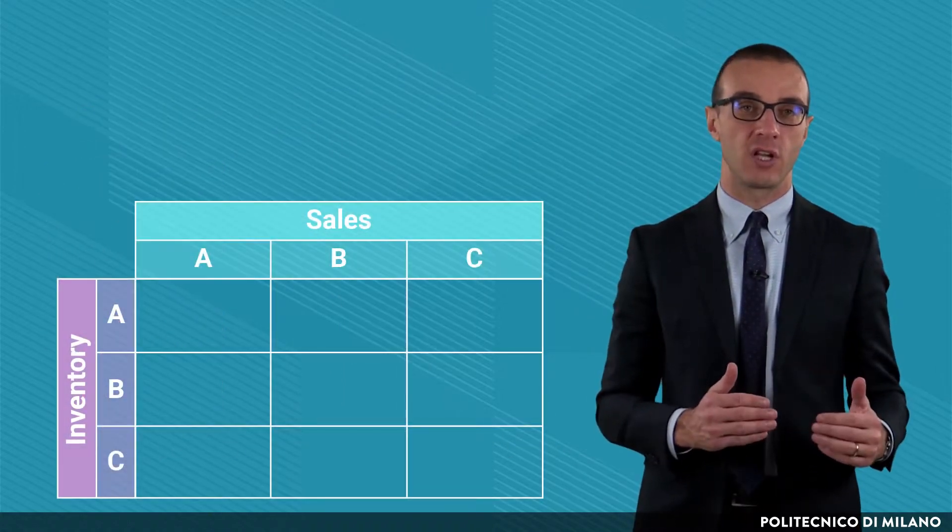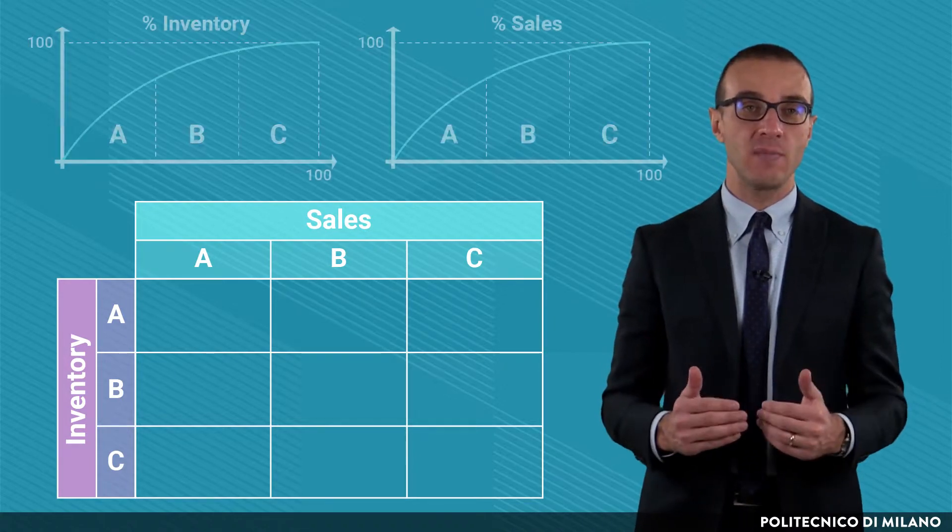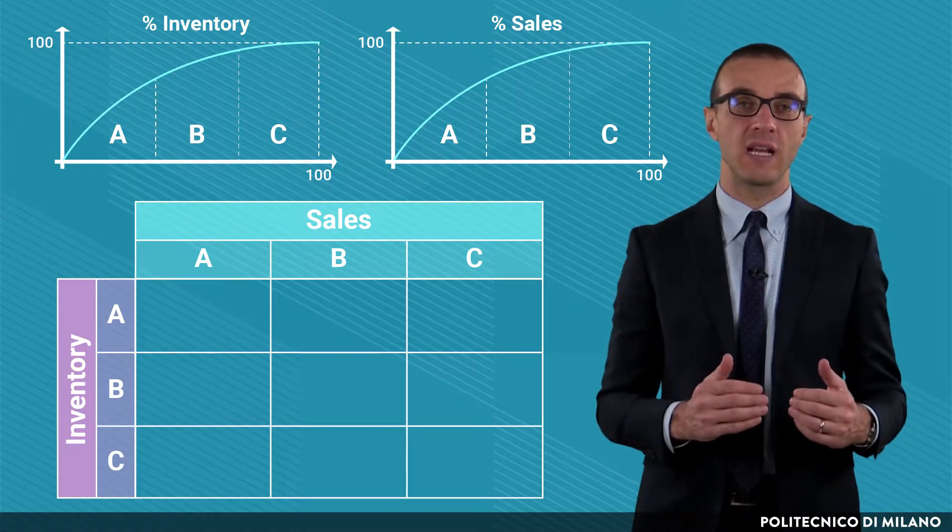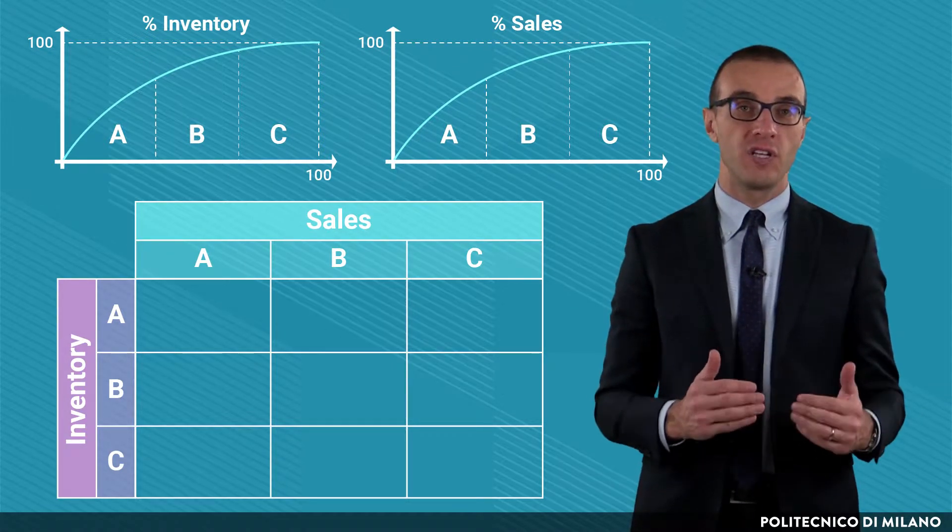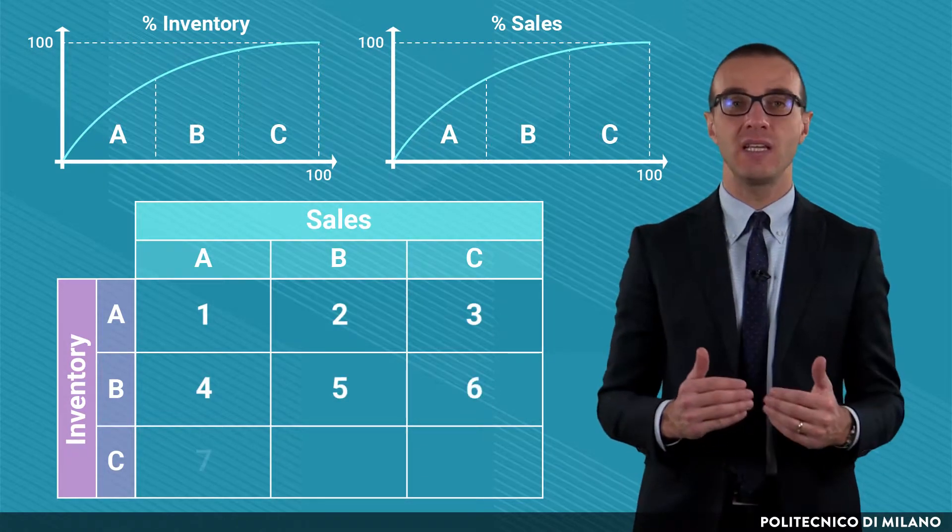Based on the tables of both the inventory and the sales, it is possible to derive the so-called ABC Inventory Sales matrix. Crossing the three classes derived for the inventory with those derived for the sales, nine categories of items can be identified.